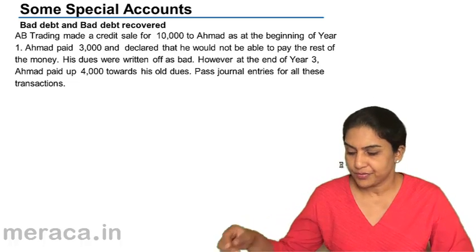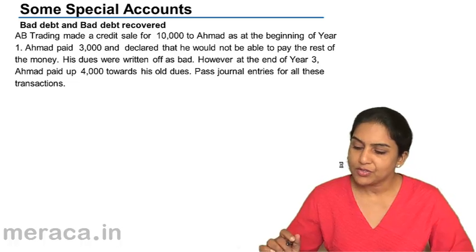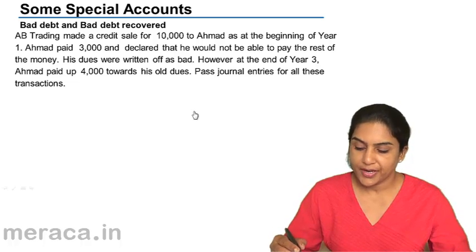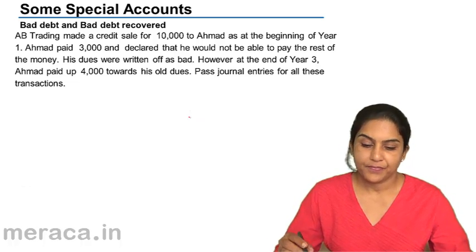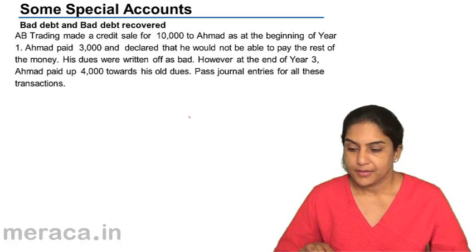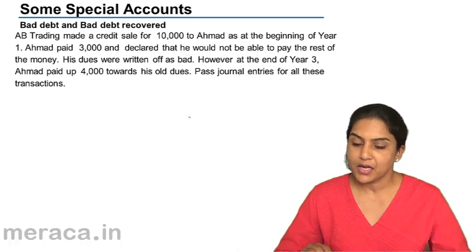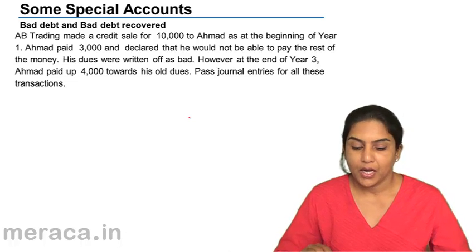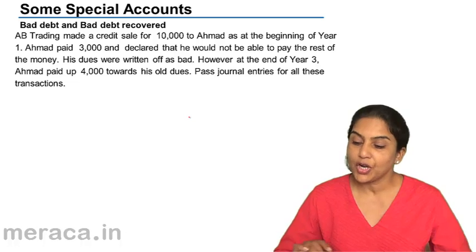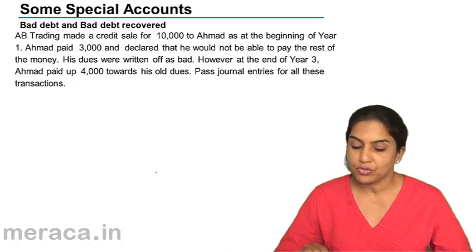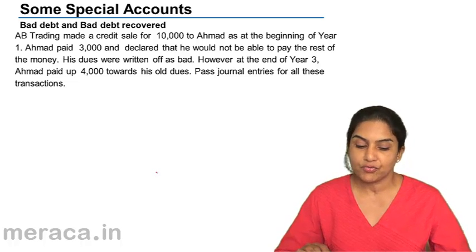Some special accounts — not the normal purchase and sale, but slightly different transactions which arise. AB Trading made a credit sale of 10,000 to Ahmad at the beginning of year one. Ahmad paid 3,000 and declared he would not be able to pay the rest. His dues were written off as bad. However, at the end of year three, Ahmad paid 4,000 towards his old dues. So, what are the special accounts we are trying to cover here?